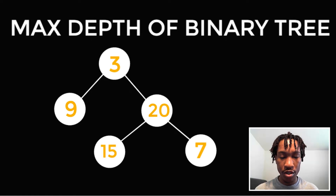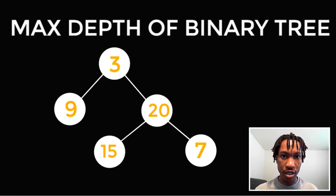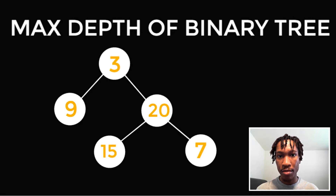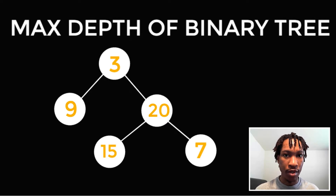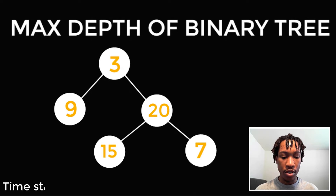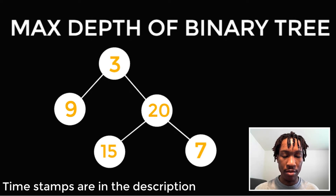To solve this question, we're going to iterate through the tree. For every node, we're going to find the length of its right child path and then its left child path. We're going to take the maximum of those two plus one, and then return that number. That's going to help us find the maximum depth of the binary tree.